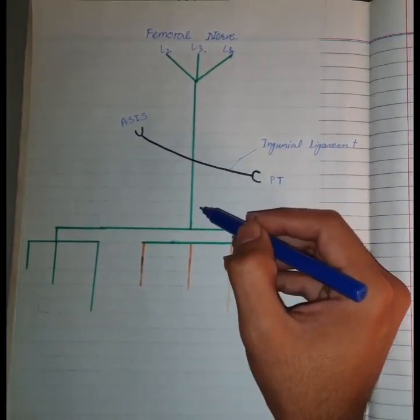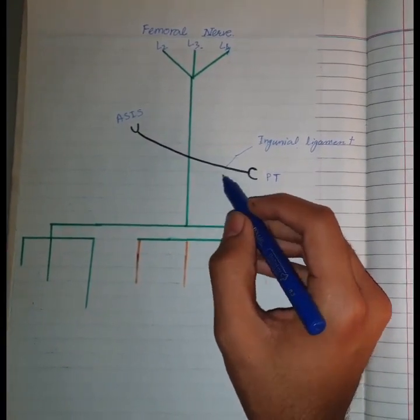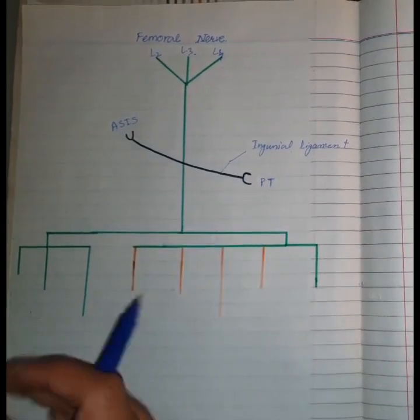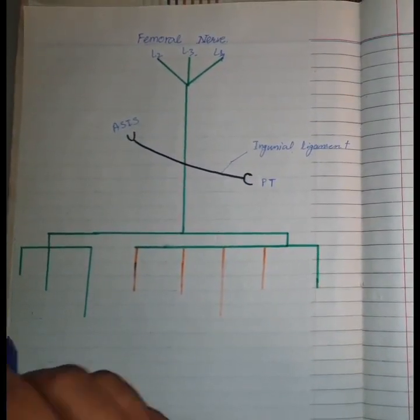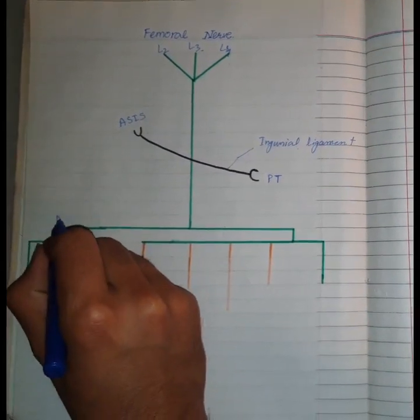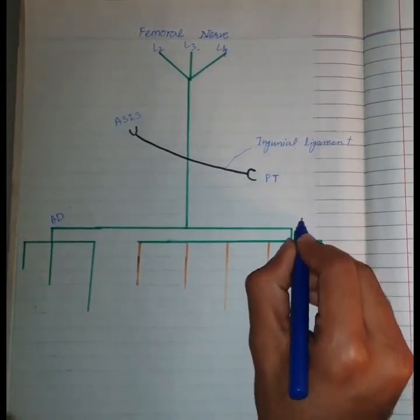It passes downwards about 2.5 centimeters, then it divides into two divisions: anterior division and posterior division.